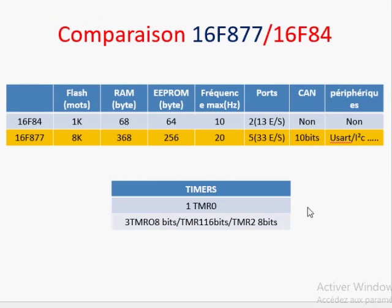Ce tableau permet une comparaison entre le 16F84 et le 16F877. On voit une différence au niveau de la taille mémoire, au niveau de la fréquence, au niveau du nombre de ports, et l'existence du convertisseur analogique numérique dans le 877, qui est l'objectif de notre séance. Le 877 possède aussi trois timers : deux de 8 bits et un de 16 bits.